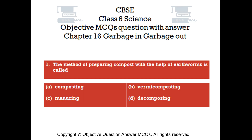Question number 1. The method of preparing compost with the help of earthworms is called: Option A - composting. Option B - vermicomposting. Option C - manuring. Option D - decomposing.